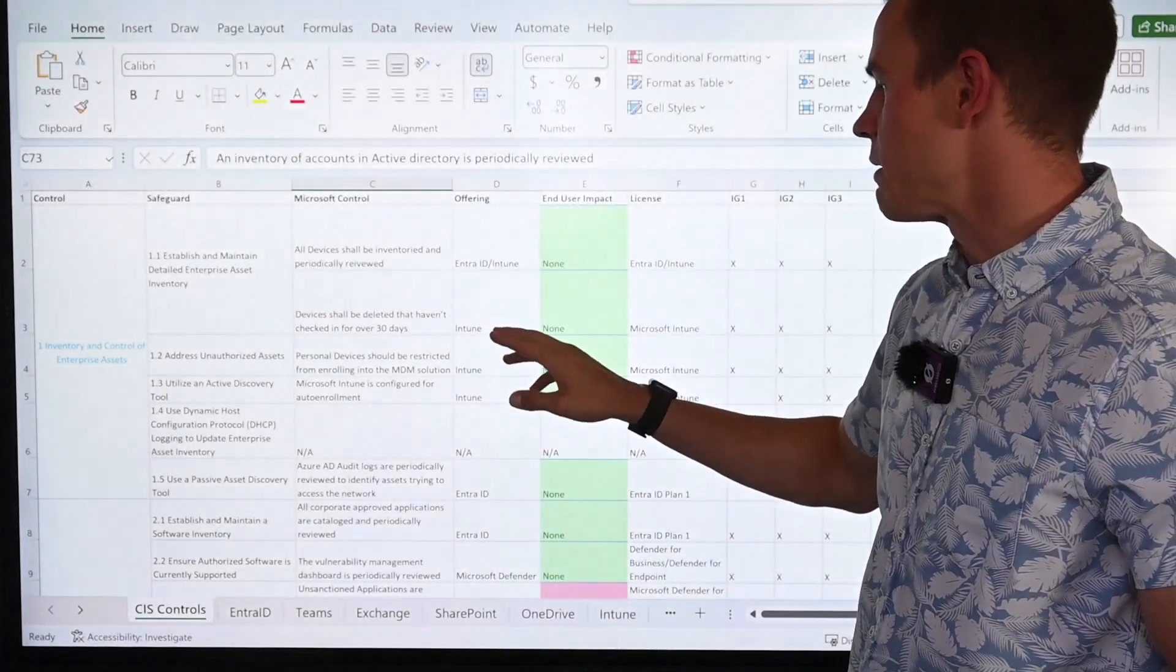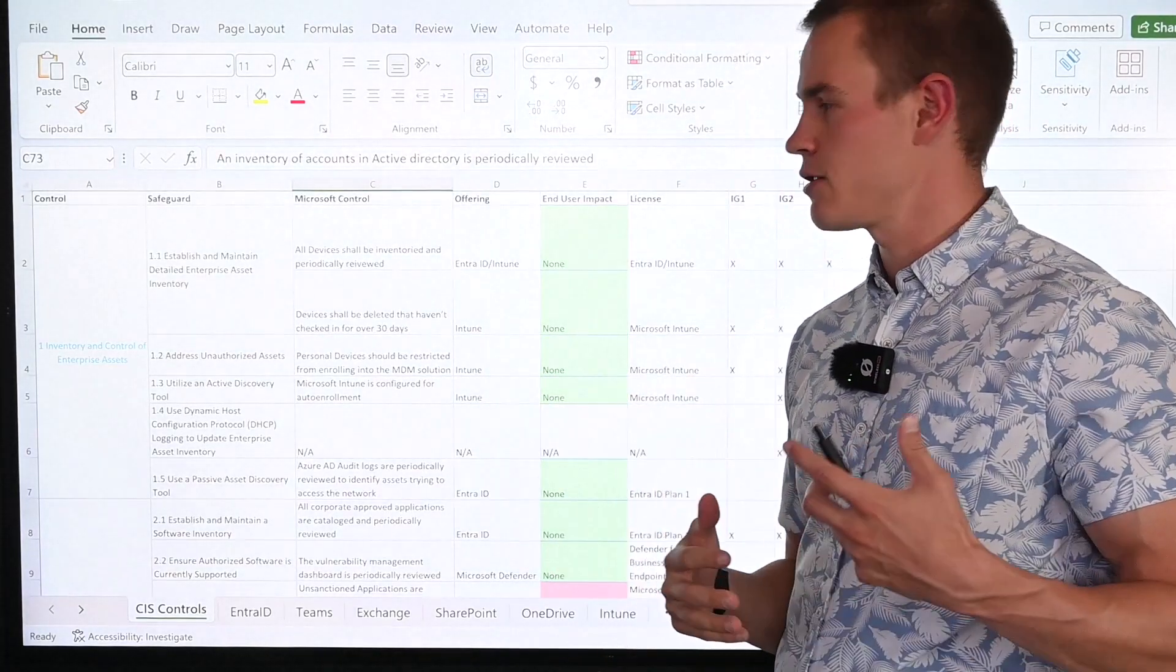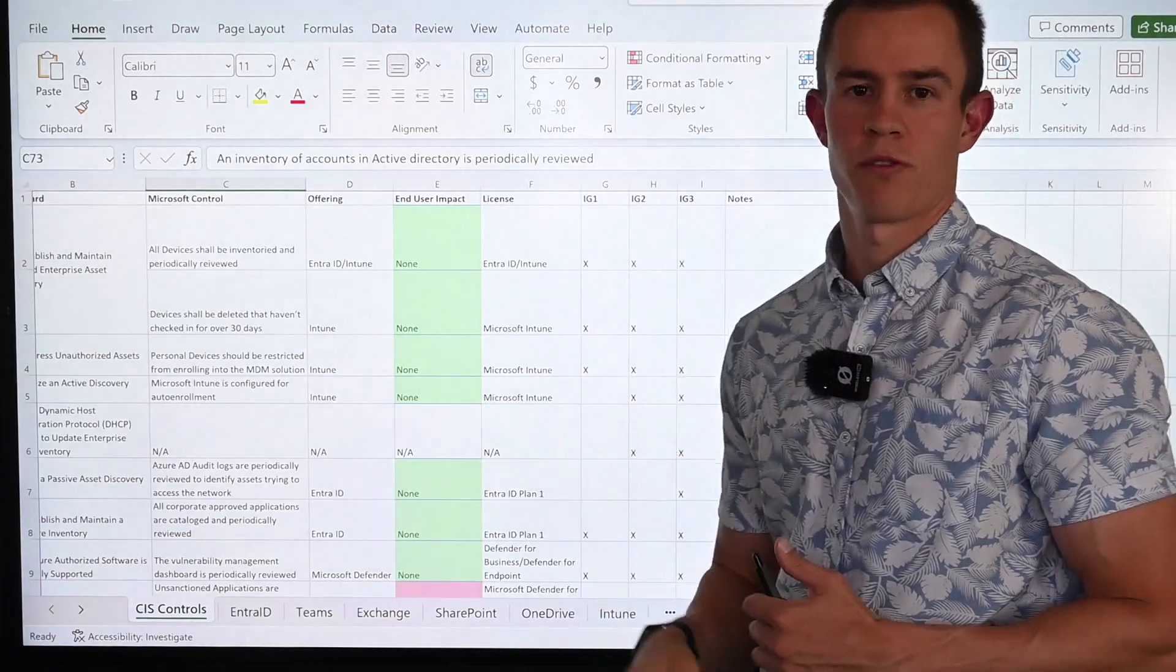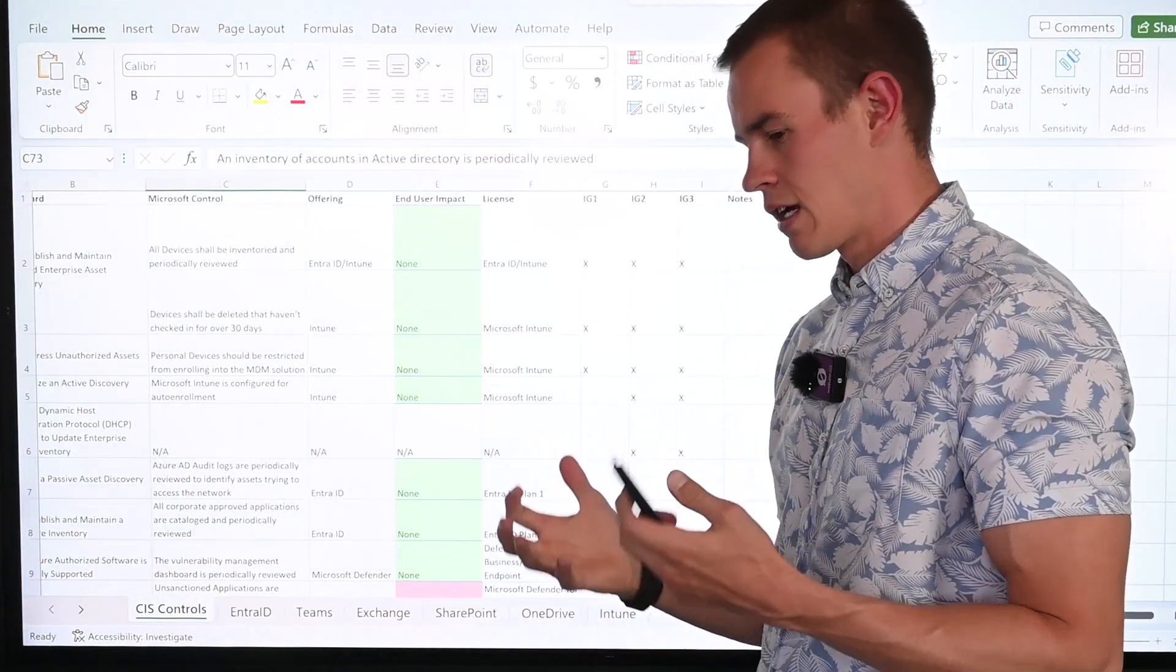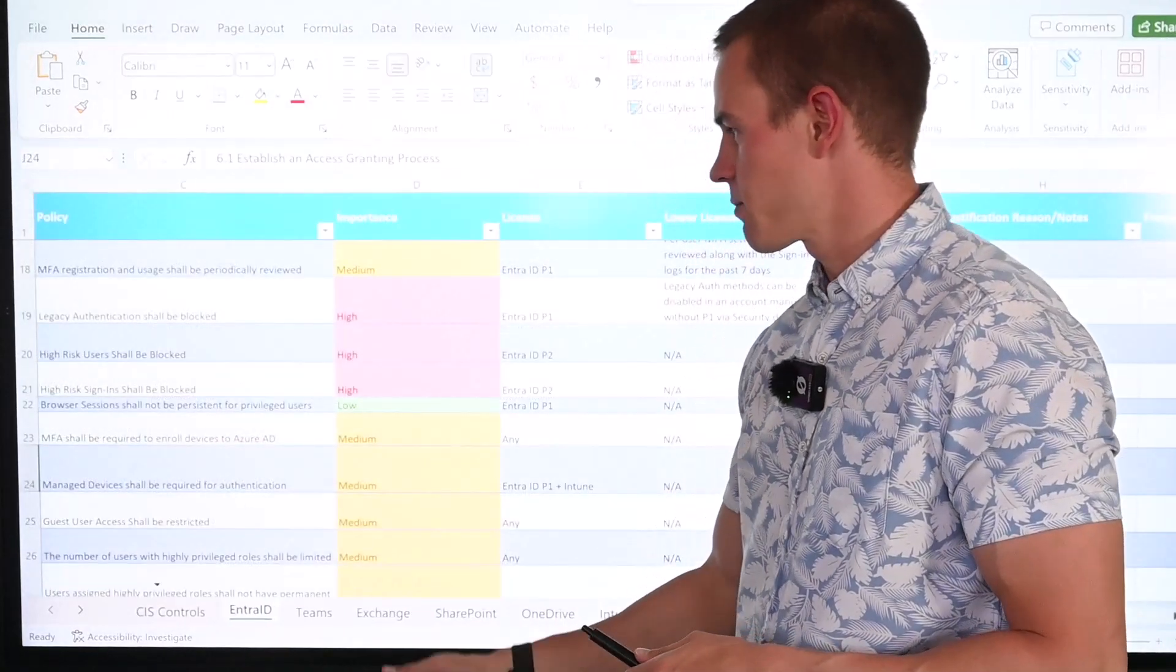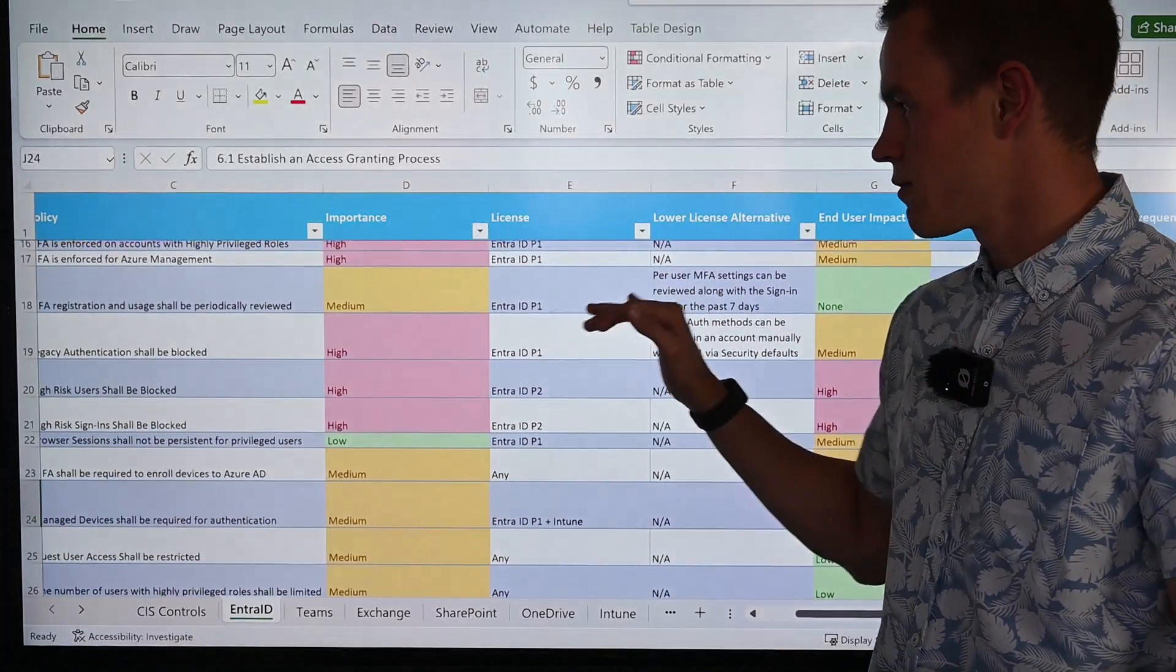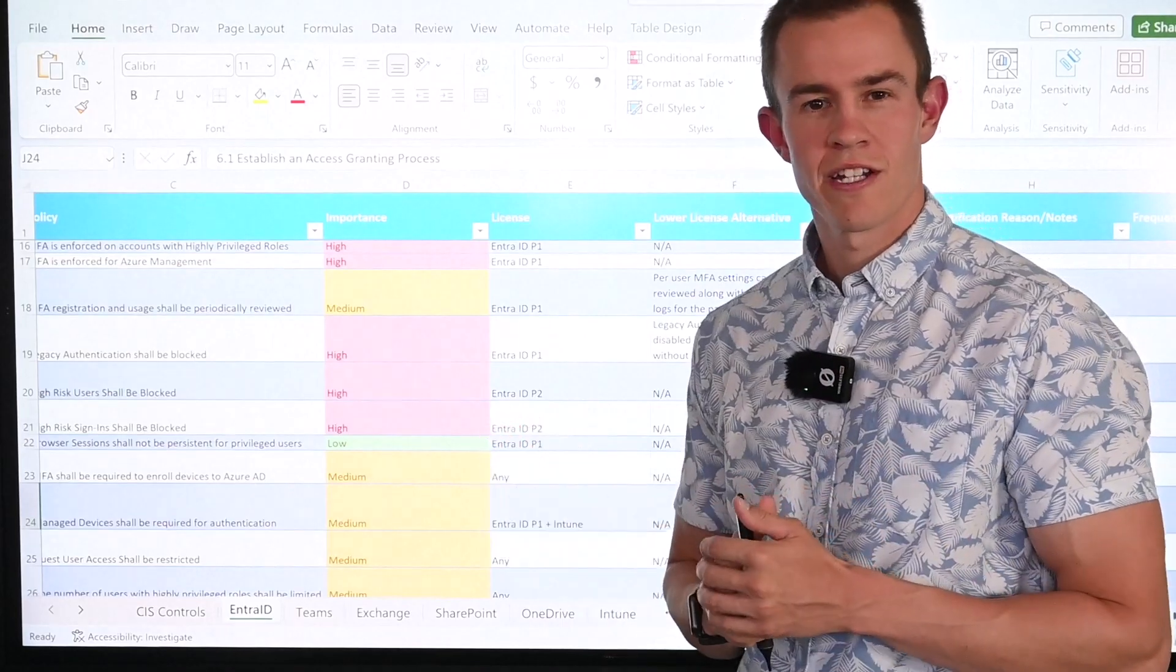And with that, I'm going through and providing you what offering that's part of, as in the suite offering, whether that's Intune, Entra ID, SharePoint, etc. Showing you the end user impact by level, the licensing considerations, and then the IG1 through IG3 designations. So we're going to be unpacking more of that today and just holistically what it means to have better security with Microsoft, with the CIS controls in mind. But as you can see, I go through each individual offering as separate tabs as well too, just so you can see those. And you can ultimately use this as a gap analysis for your customers as well.